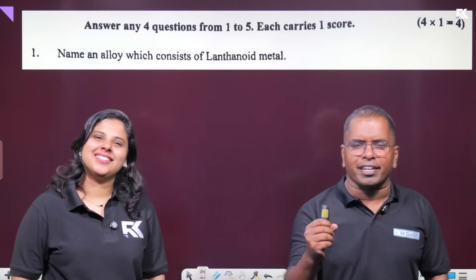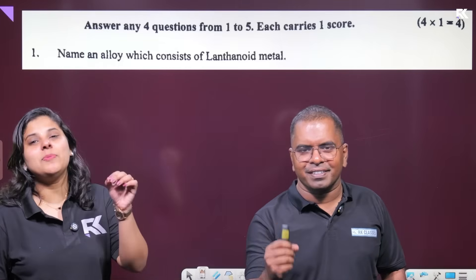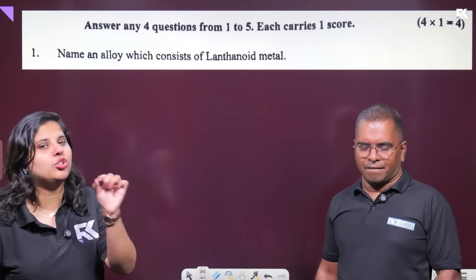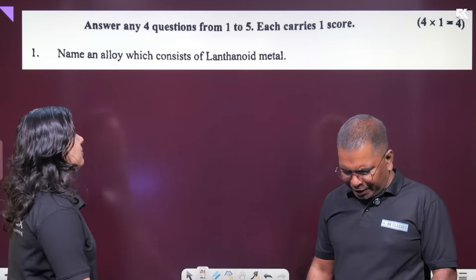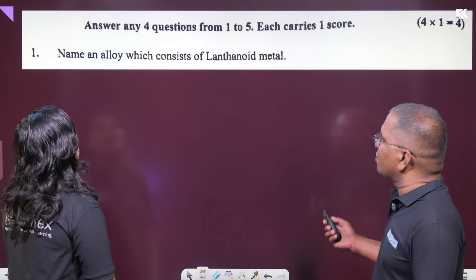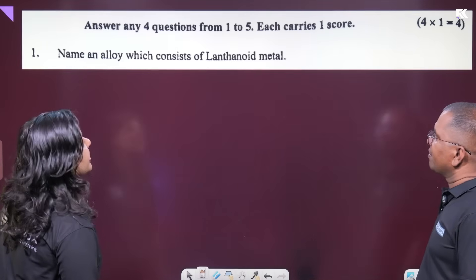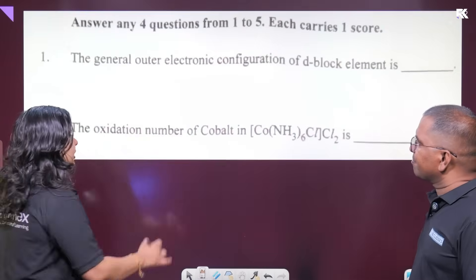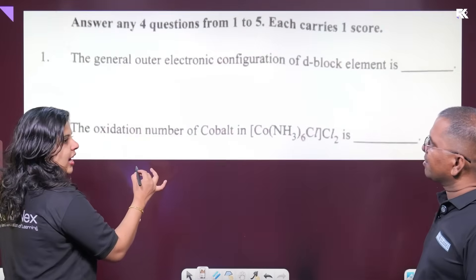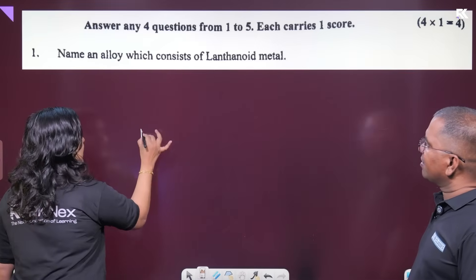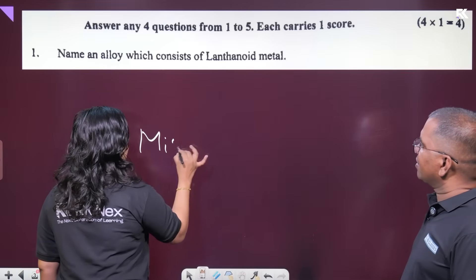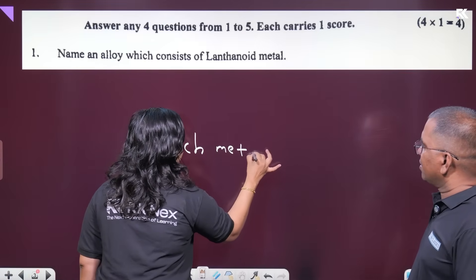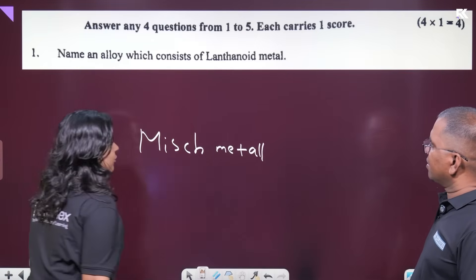Welcome back to Arcanics. We will talk about an alloy which consists of lanthanoid metal. Lanthanoid metal is an alloy and a misch metal. The misch metal is 95% of lanthanoid metal.